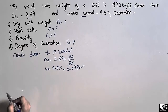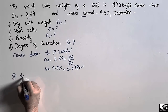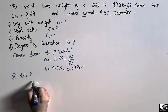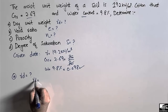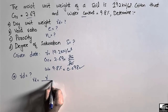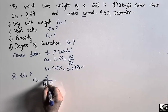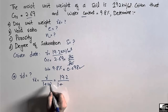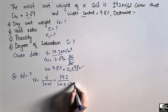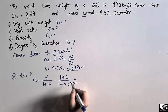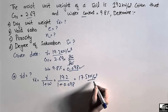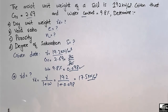Part A: find the dry unit weight γd. One of the basic equations of soil mechanics is: γd = γ / (1 + w), where γ is the moist unit weight = 19.2 kN/m³ and w = 0.098. Dividing gives γd = 19.2 / 1.098 = 17.5 kN/m³.